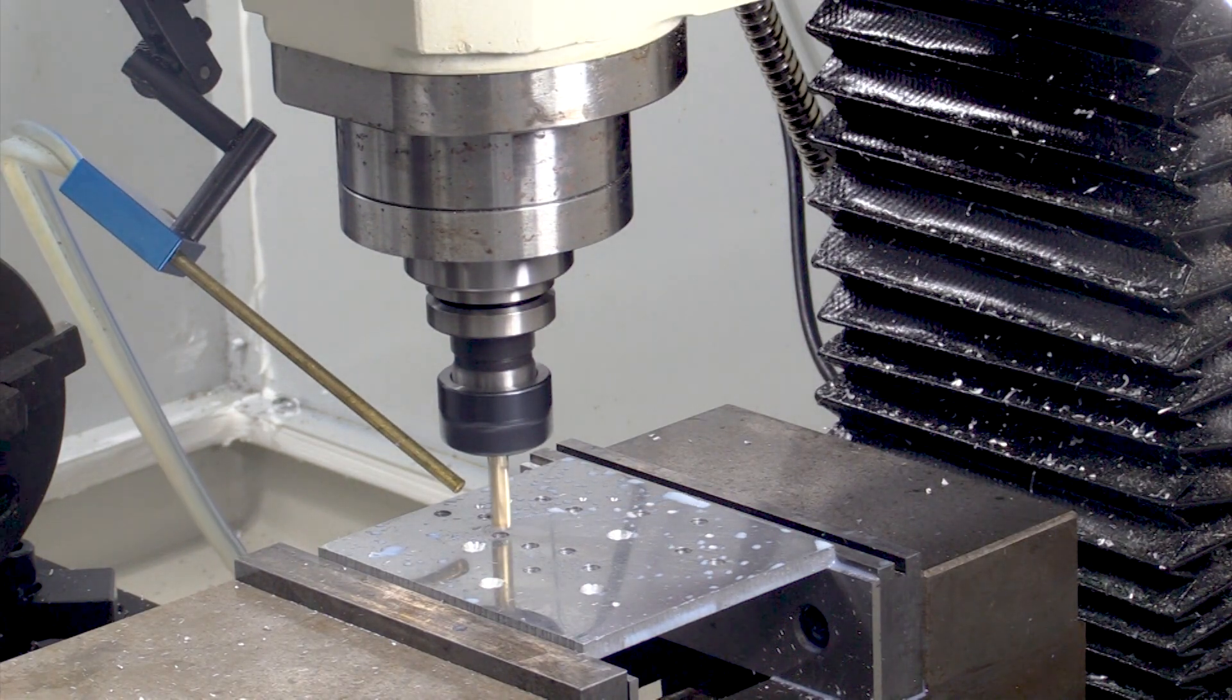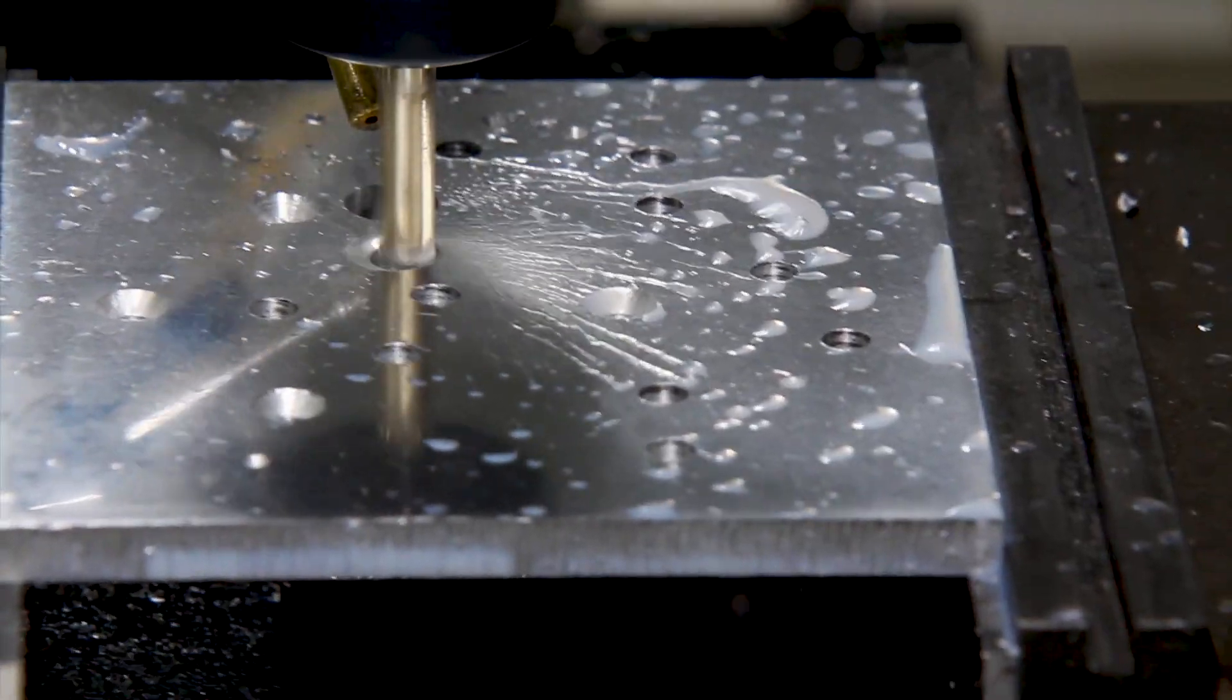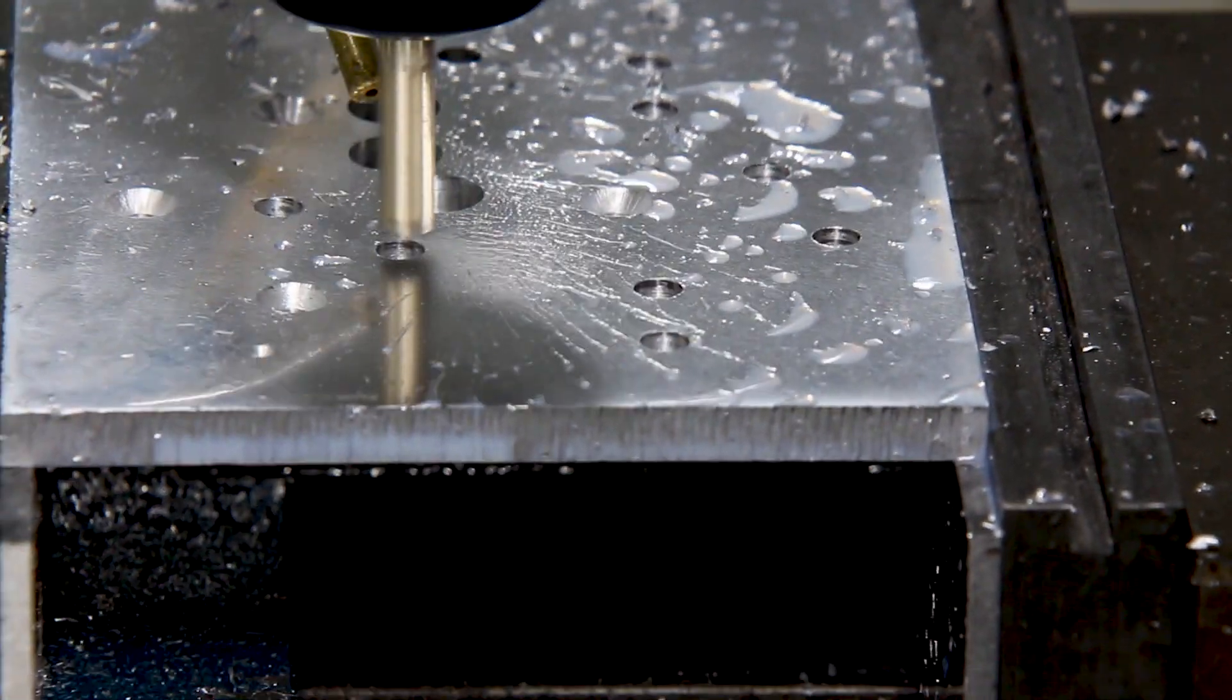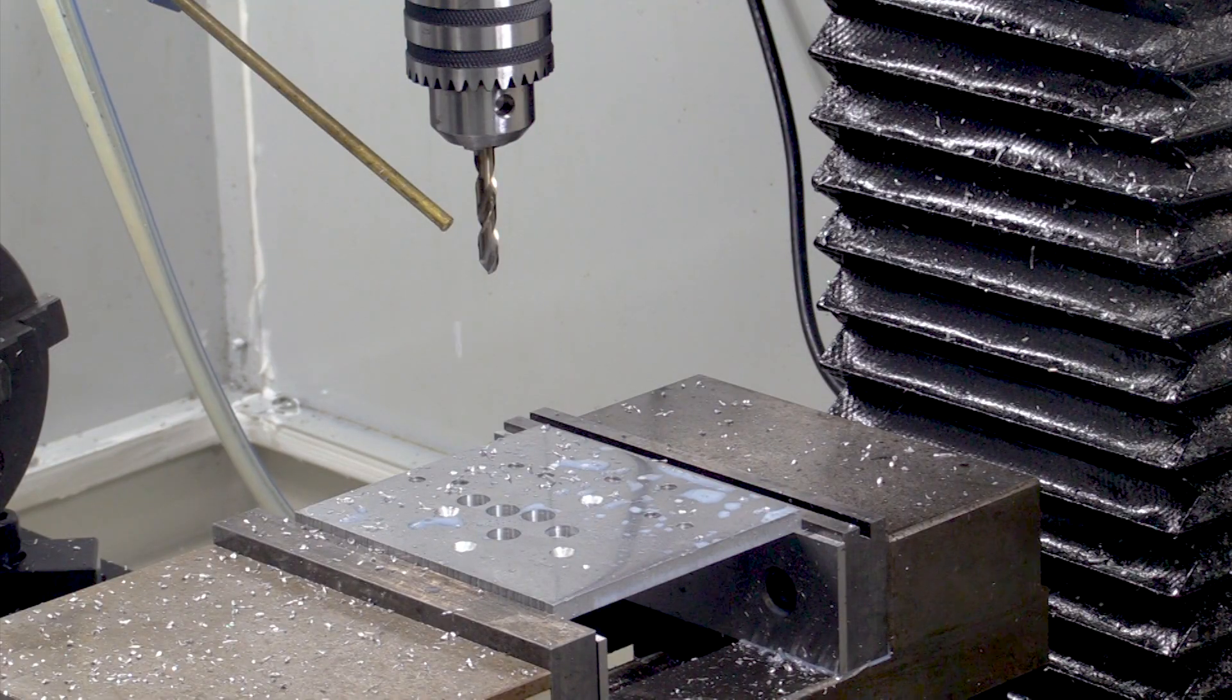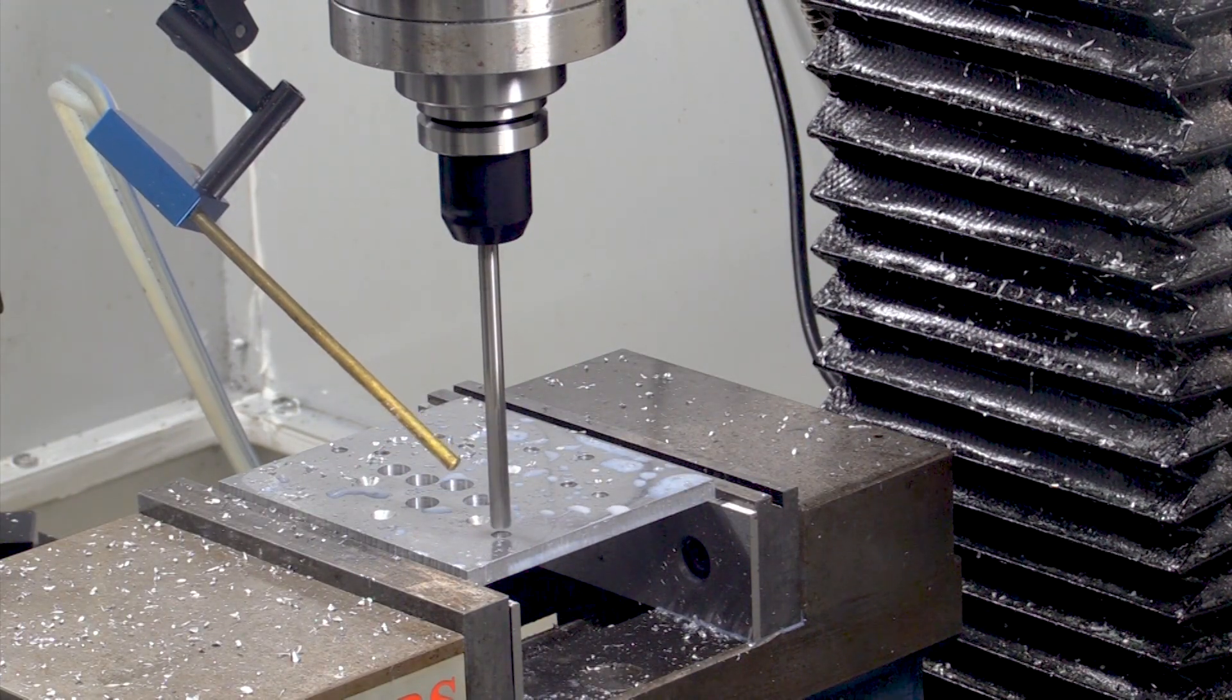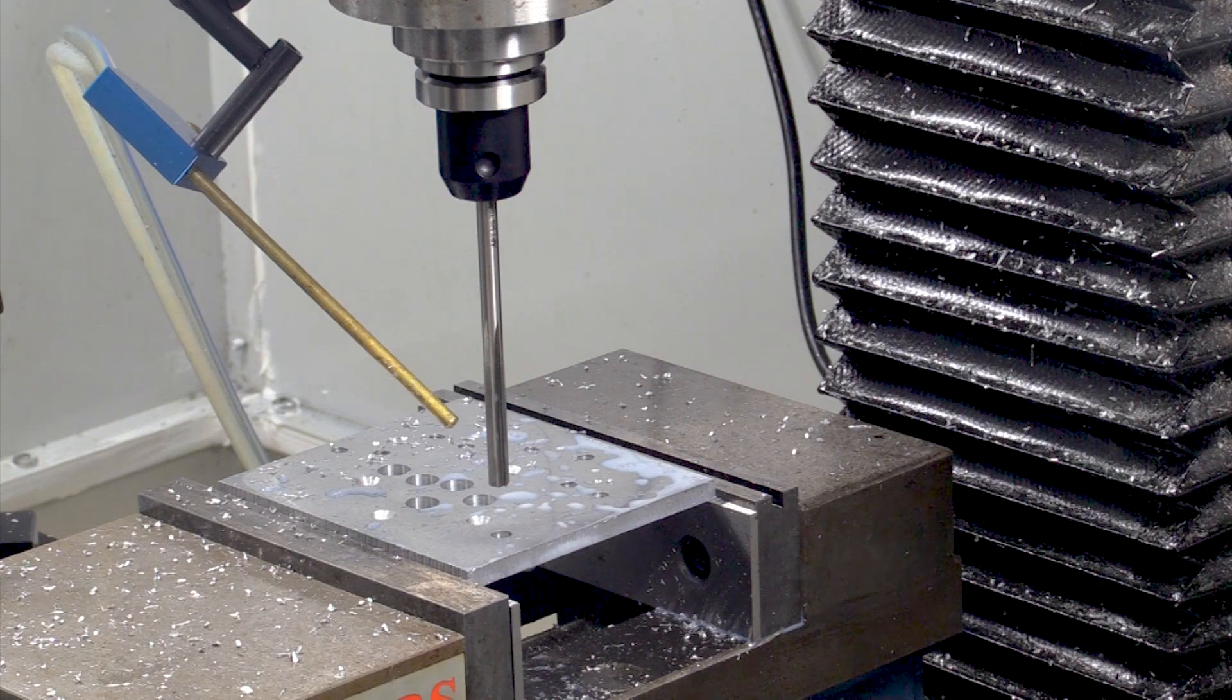Now I'm going to bore the five holes that are going to hold the swivel joints that support the pistons for the fingers. And now I have to drill and ream a precise hole for holding the thumb in place. And that's it for this step of the operation.